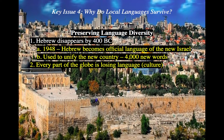Key issue four, the last one: why do local languages survive? A lot have been on the verge of extinction and have come back. Hebrew is a great example — as the Jewish people were scattered around the globe, particularly in Europe, Hebrew began to disappear. Once Israel was created in 1947 and 1948, they made Hebrew the official language in order to preserve that culture and restore Jewish identity. Language is critical to recreating or establishing your culture. Every part of the globe is losing language as English becomes more dominant — South America, Australia, the Pacific Islands, even Native Americans in North America are not always as lucky as Hebrew.